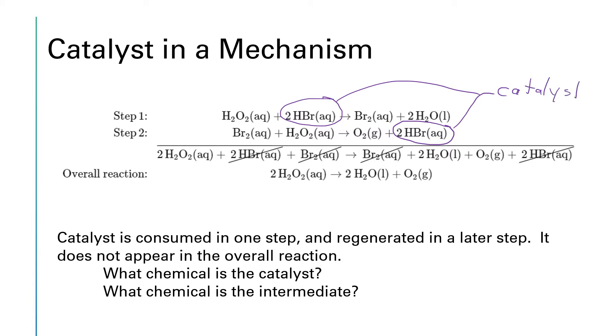Now an intermediate is something that gets made in one step and then consumed in a later step. So let's see if we can identify the intermediate. It looks like bromine gets made in one step and then it gets consumed in a later step, and so bromine acts as an intermediate in this mechanism.